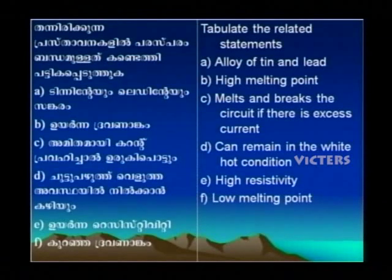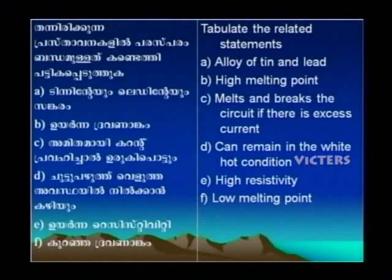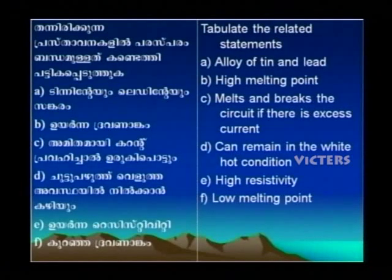The properties related to fuse wire: A — an alloy of tin and lead; B — high melting point; C — melts and breaks the circuit if there is excess current; D — can remain in white-hot condition; E — high resistivity; F — low melting point.